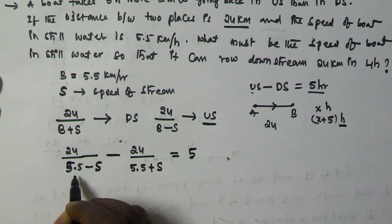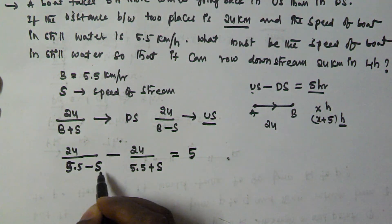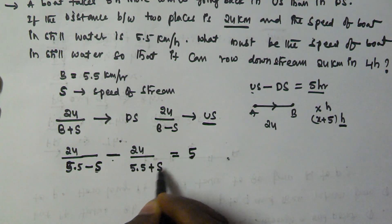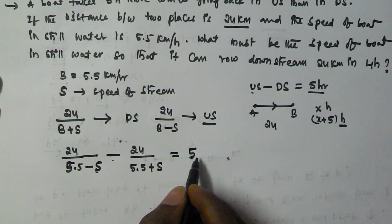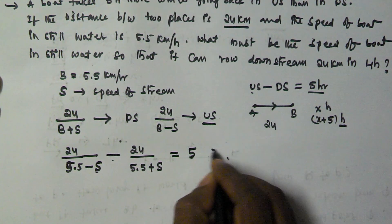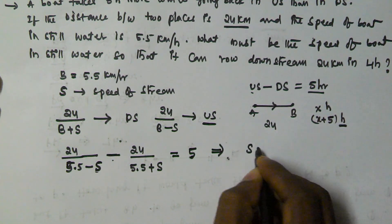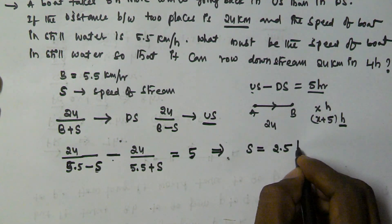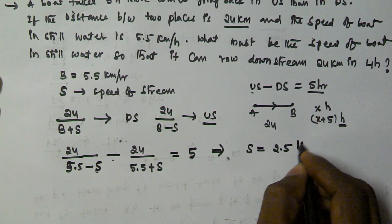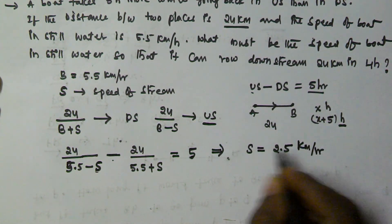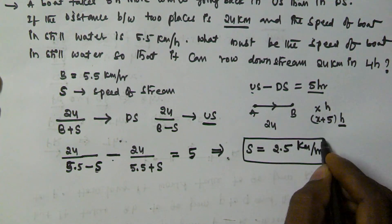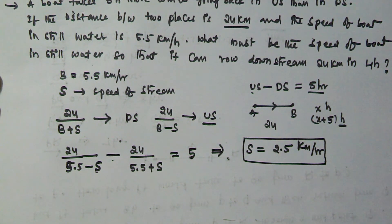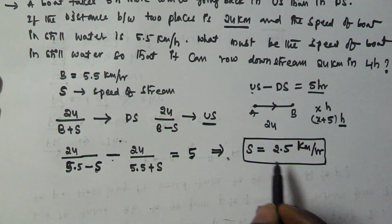So here: 24 divided by (5.5 minus s) minus 24 divided by (5.5 plus s) equals 5. By solving this equation, we get s equals 2.5 kilometers per hour. So s is the actual speed of the stream, and now we know the speed of the stream.